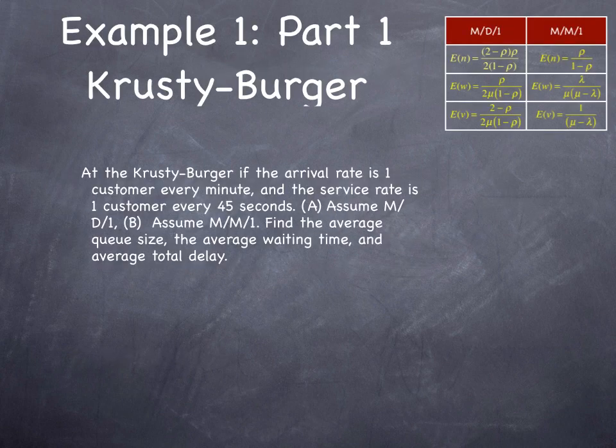We'll run through an example. This is my Krusty Burger example. For those of you who don't know, this is a Simpsons reference. Not everybody grew up in American culture. Krusty Burger is the satire of the fast food restaurant in The Simpsons. Homer goes to the Krusty Burger. The arrival rate is one customer every minute, and the service rate is one customer every 45 seconds.